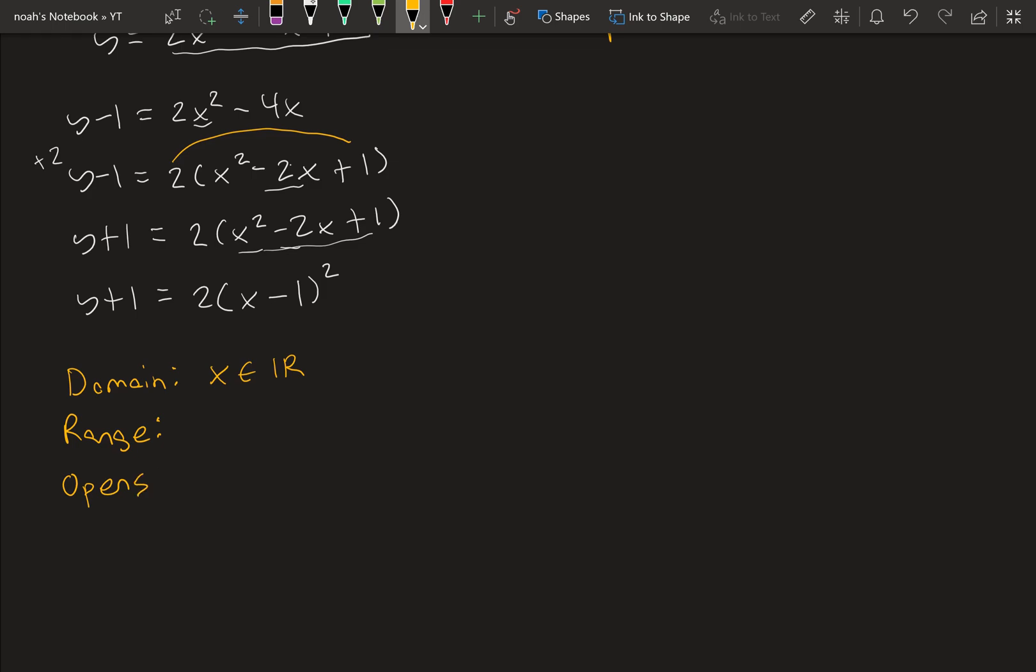So the third property is opens. So which way does the parabola open? So we look at the a value, which is 2, and that's positive. So we know it opens upwards.